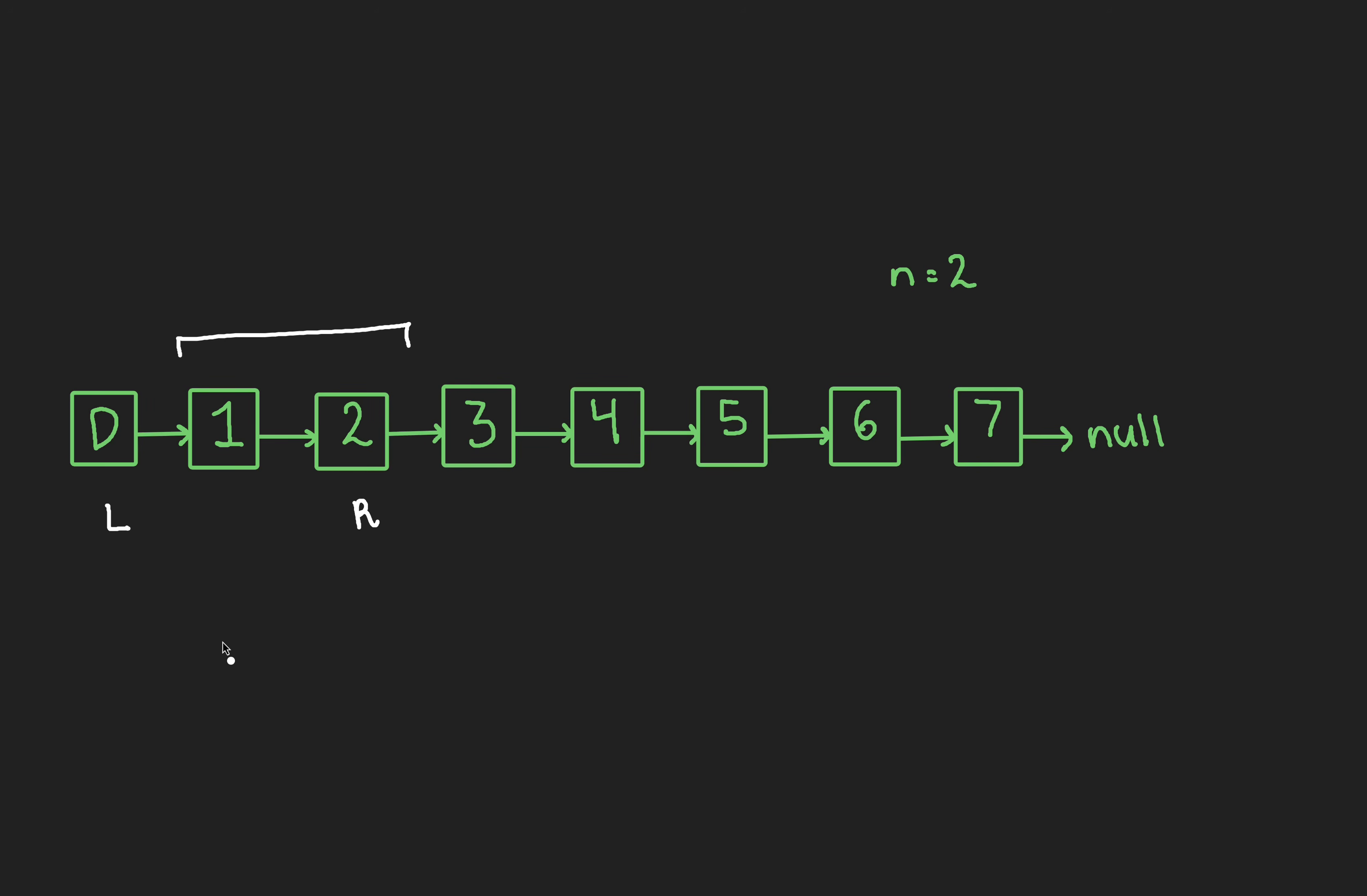After, in a while loop, we can keep shifting our window, and thus our two pointers to the right, so long as the right pointer's next node is not null pointer. Once here, we've seen it twice already, this is nothing new, we can remove node 6 by doing left next equal to left next next. Success.